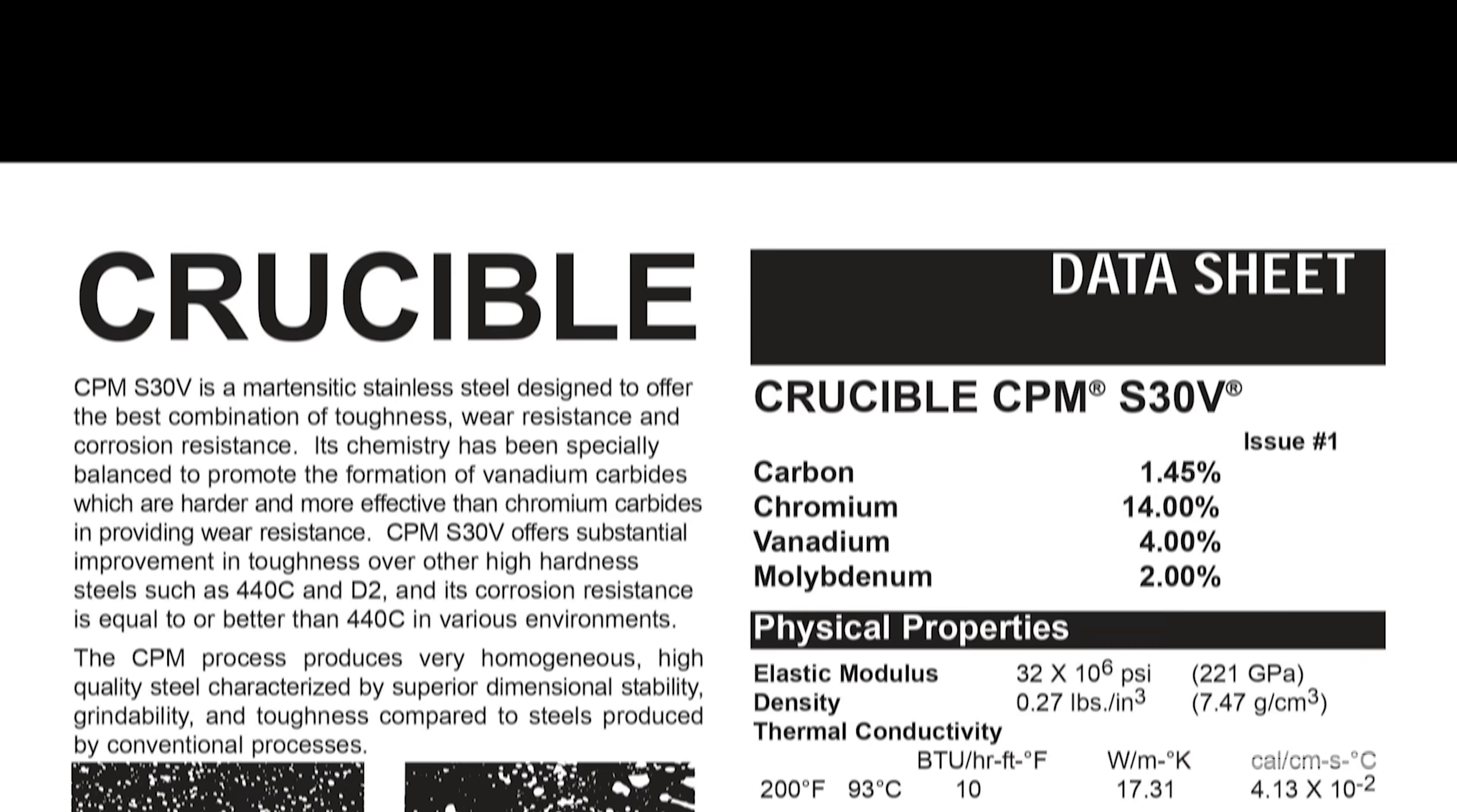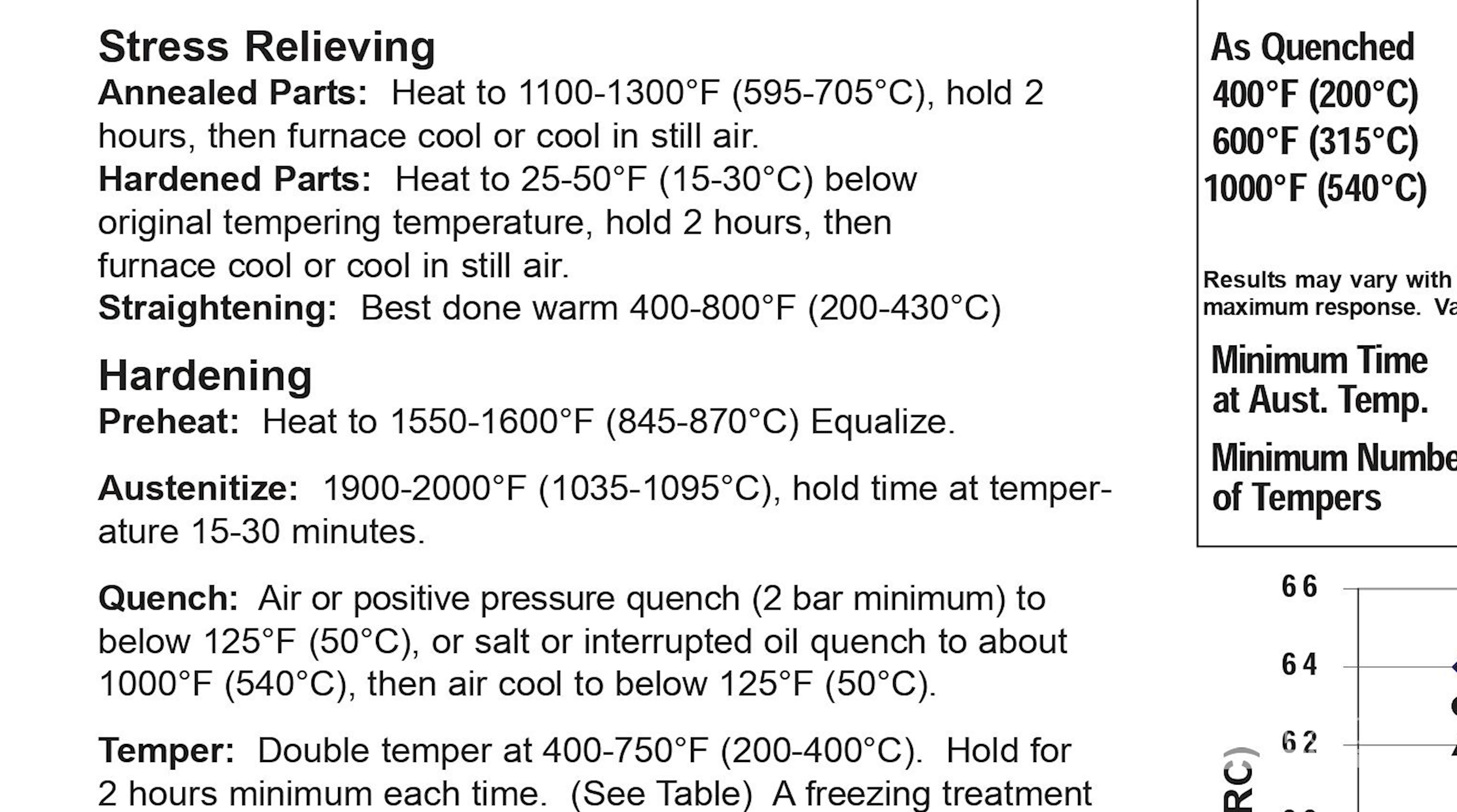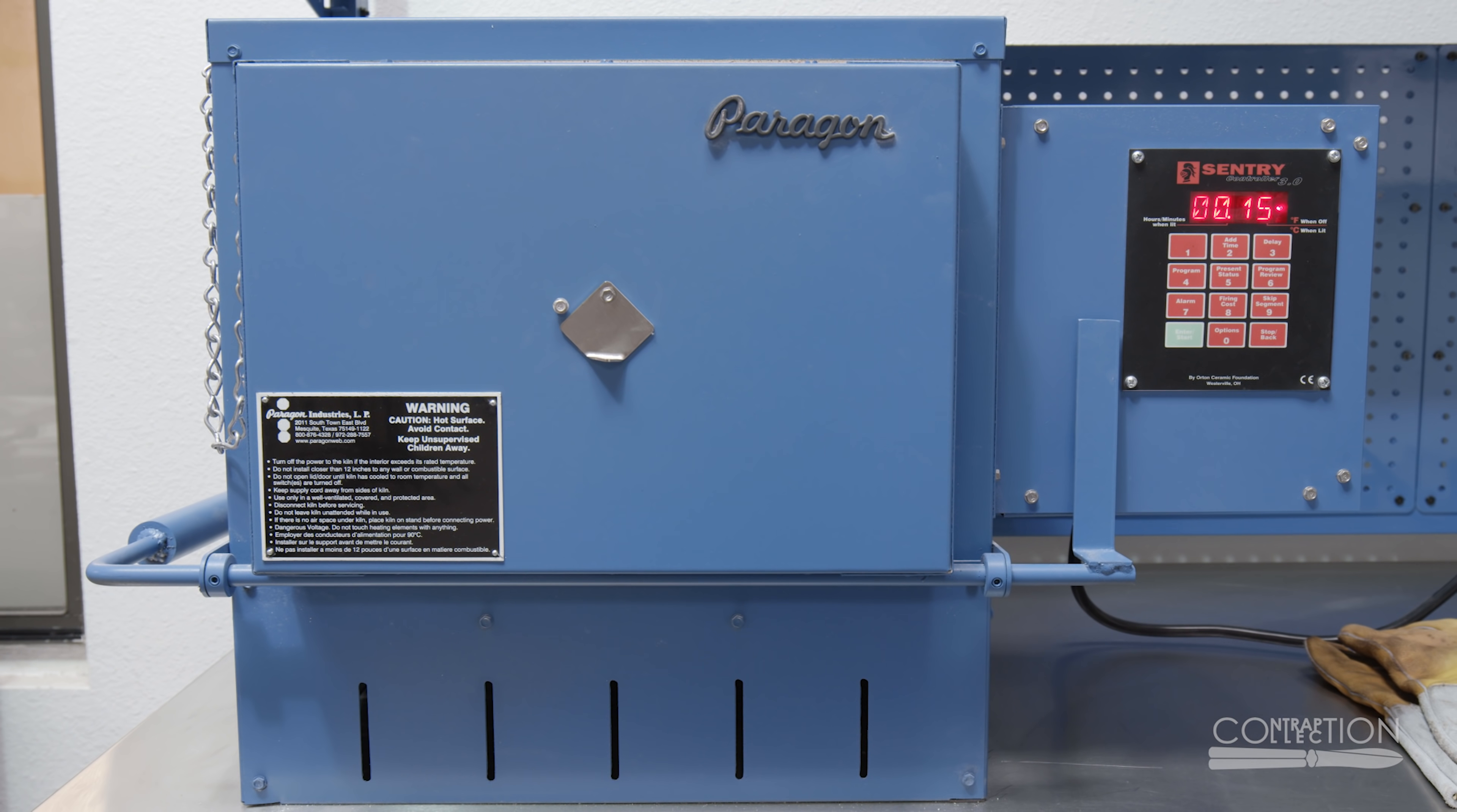The instructions for hardening this steel say to heat to 1600, but it says preheat. I don't know if this is like cooking where you're supposed to preheat the oven, or if I'm supposed to be preheating the steel. Then it says equalize. Even though I let them heat up all the way to 1600, I decided to hold them for 15 minutes, just to make sure the steel has evenly reached the right temperature. Which is what I think equalize means.